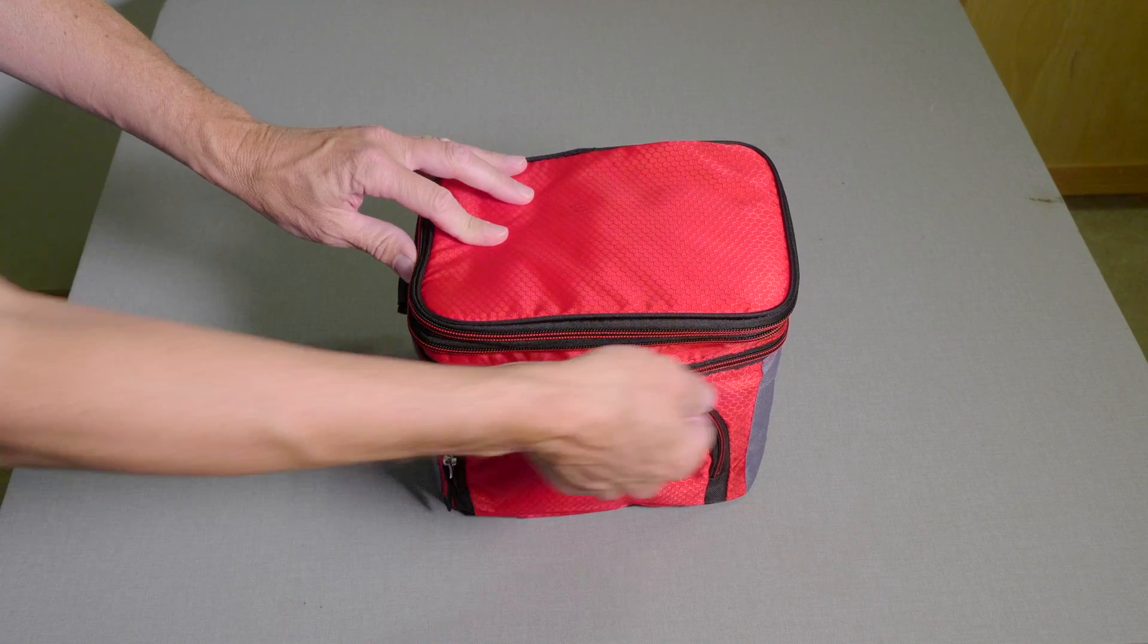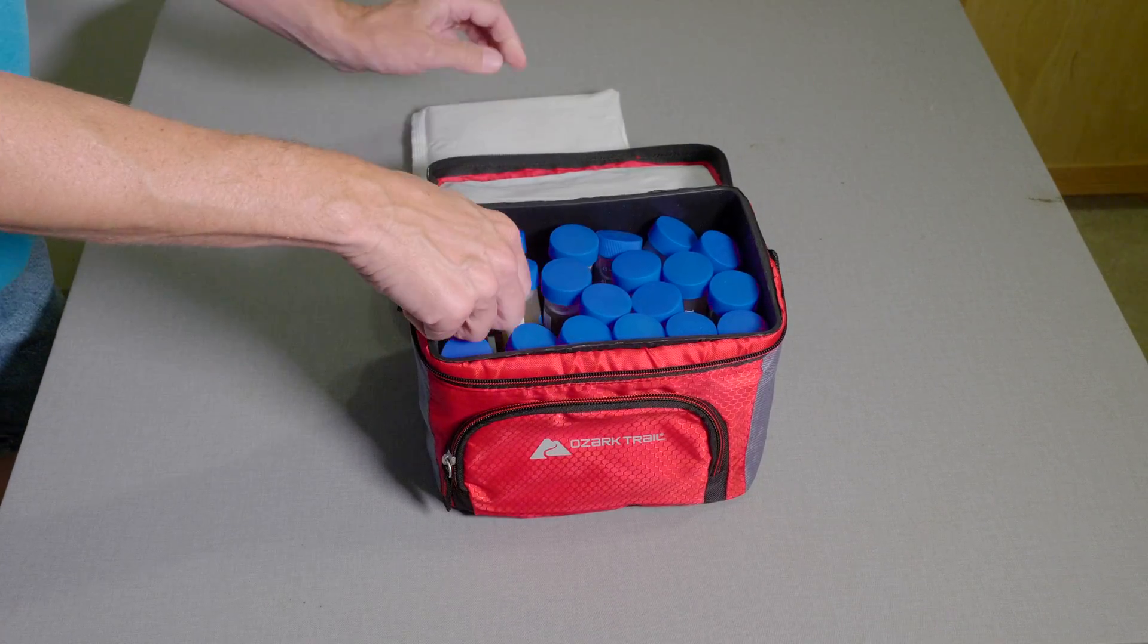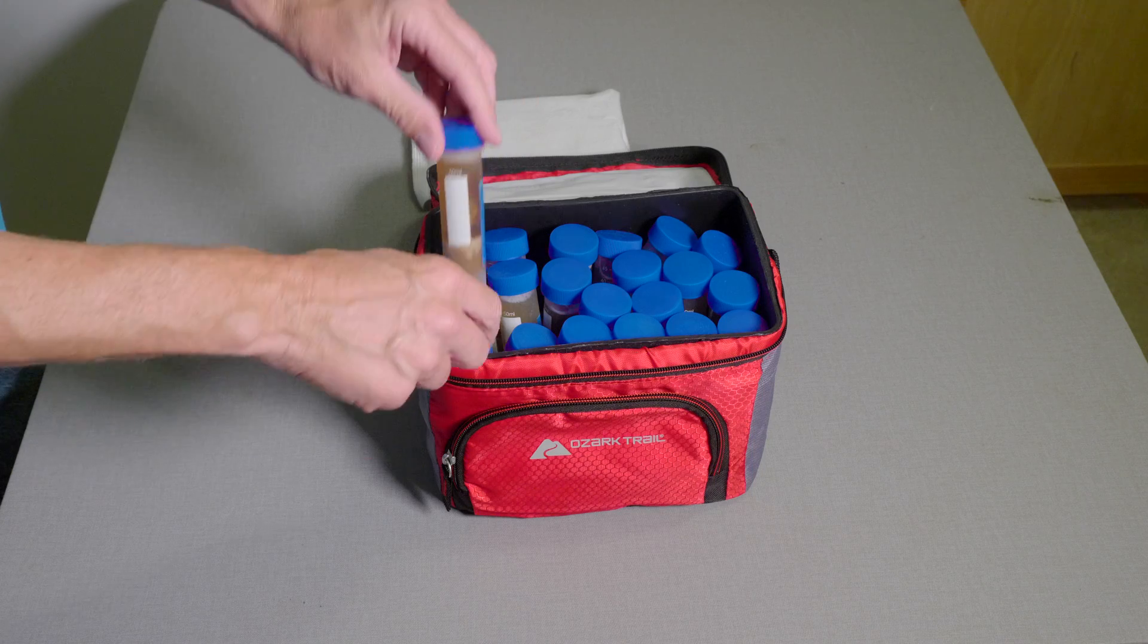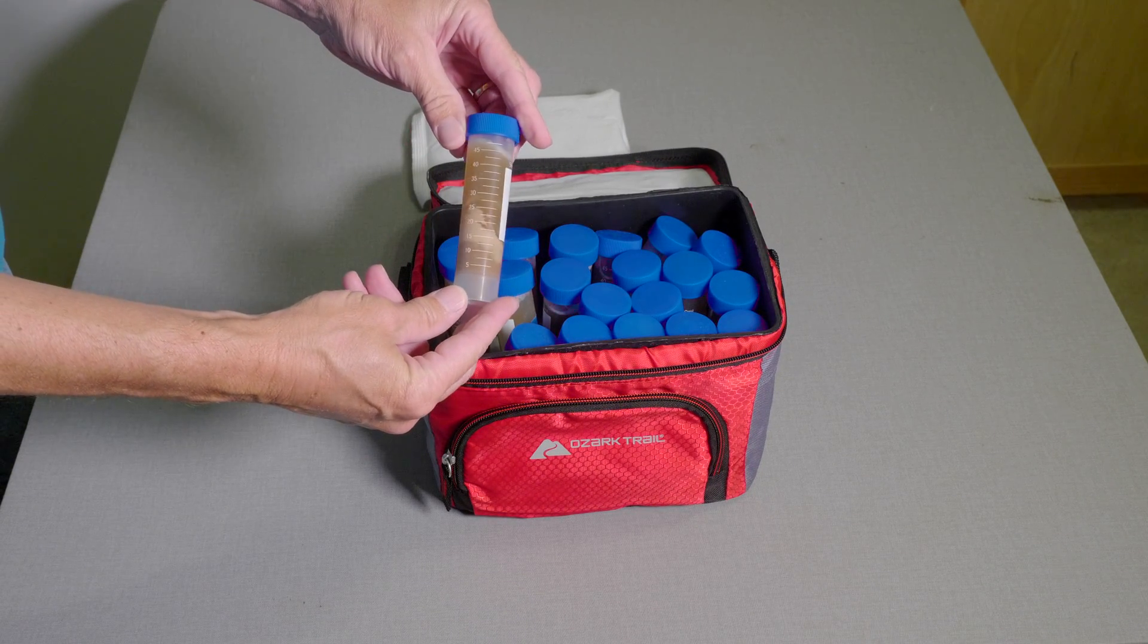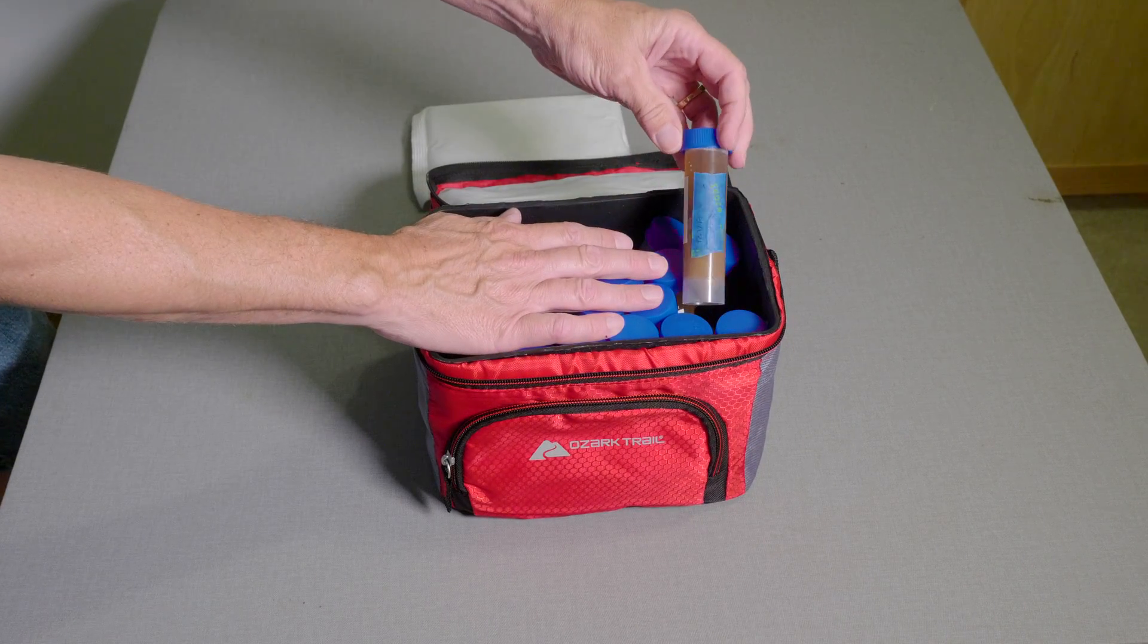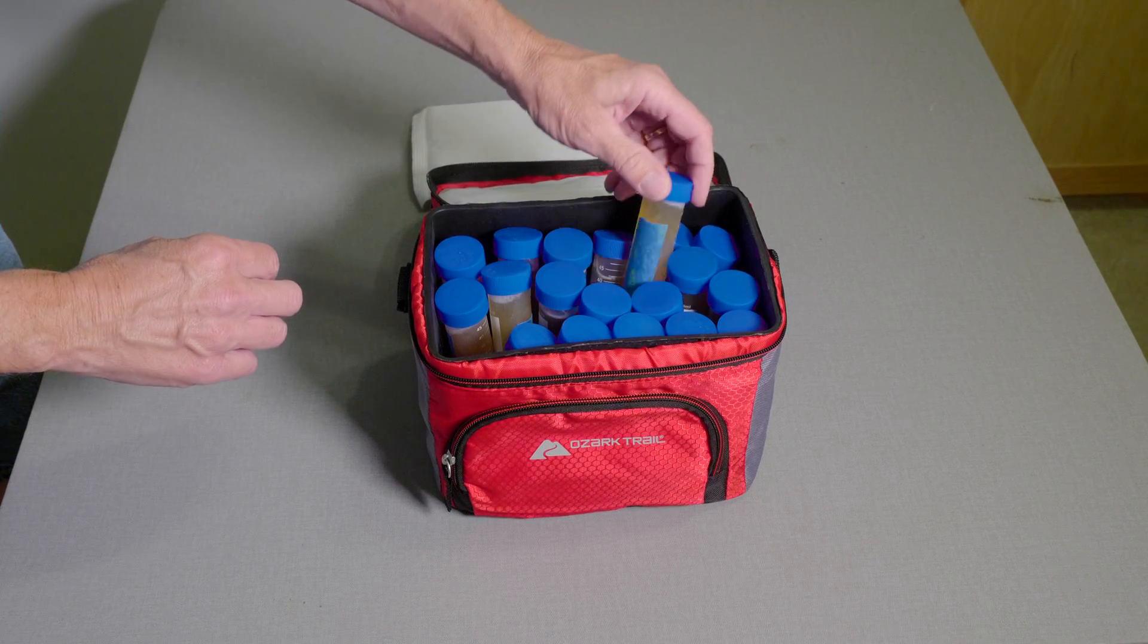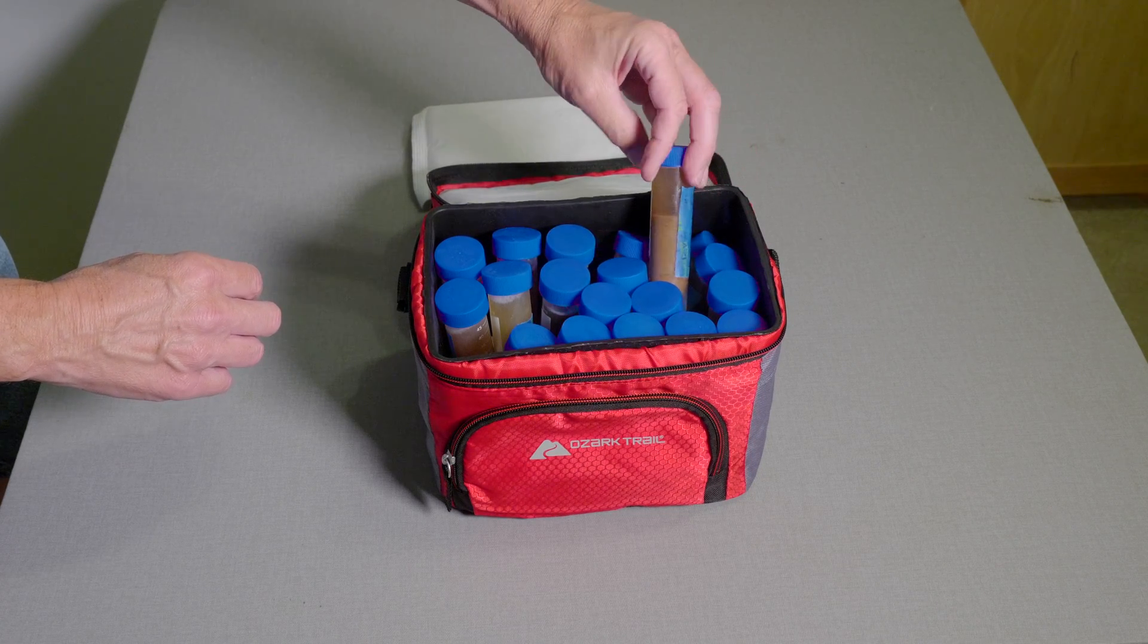Here's my entire yeast bank. I think there's four different strains in here, maybe five. You can see how they're frozen solid. We're ready to move on to the next step, which is pulling out a vial and using it to brew with. First thing we're going to do is do some starter steps. We'll begin with a 250 milliliter stage with some wort.